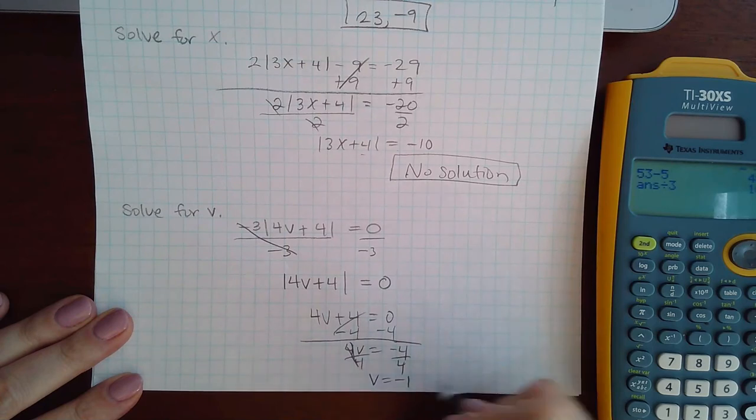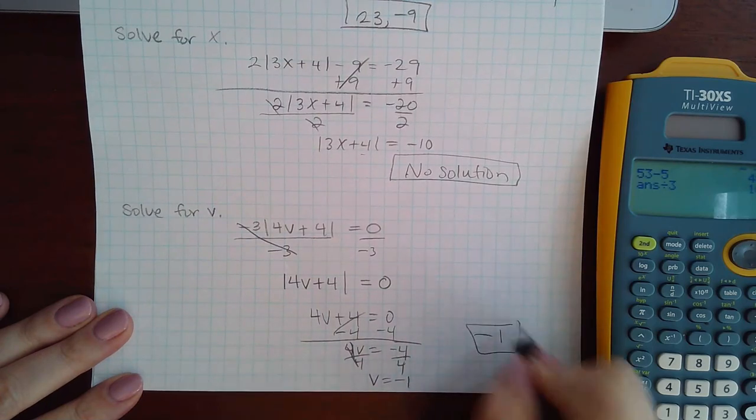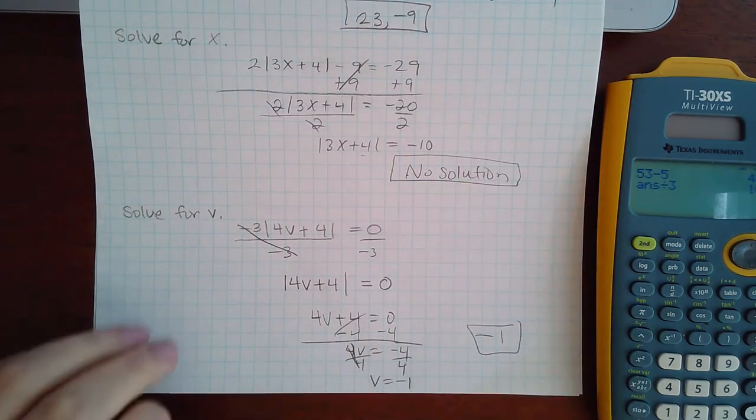V equals negative 1, and so in this case there's only one answer and it is negative 1.